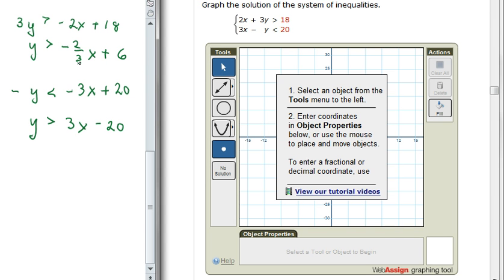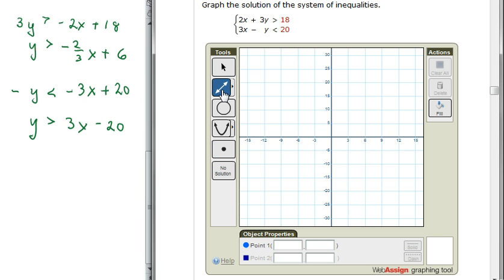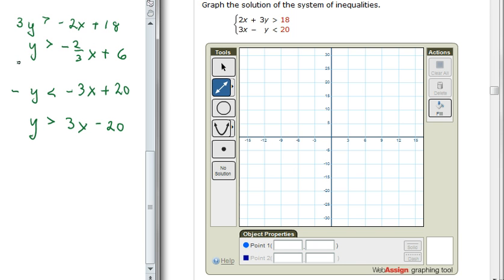So we're going to be graphing points on these two lines, thinking about the equality instead of the inequality. First of all, let's choose the line tool. And so for the first line, I could choose 0, 6 as a point. And also 3, 4.